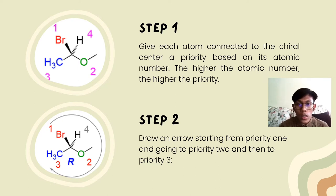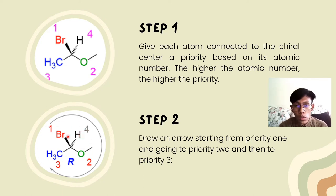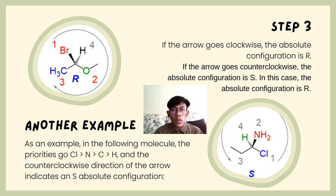After that, what we need to do is draw an arrow from the most priority ligand to the least priority ligand. From our example here, we can see that group four is in the way of one to two. So what we do is neglect the existence of four and draw an arrow from the most priority ligand to the least priority ligand — here, from bromine to methane. When we identify the direction of the arrow and it goes clockwise, the absolute configuration of the compound is R. If the direction of the arrow goes counterclockwise, the absolute configuration of the compound is S.